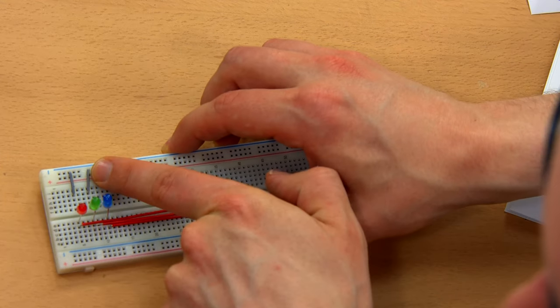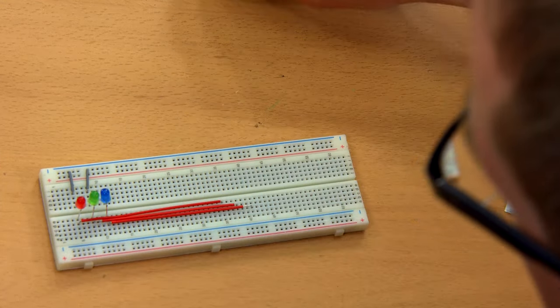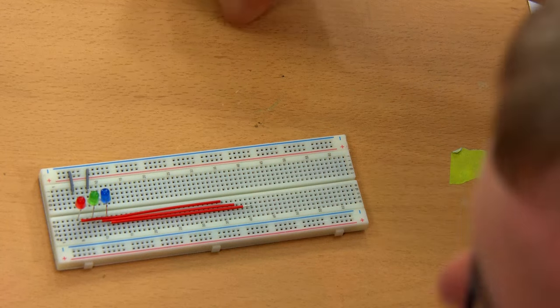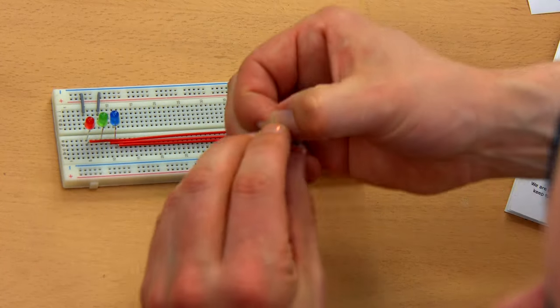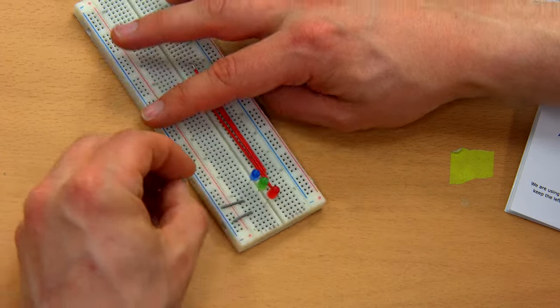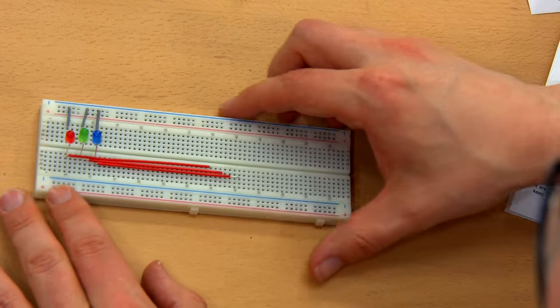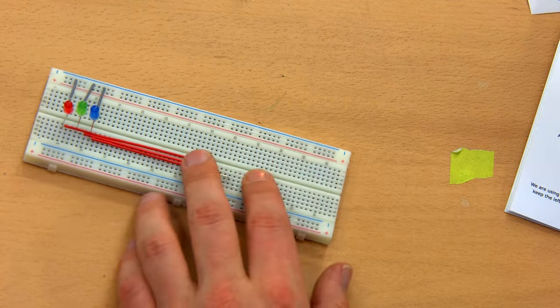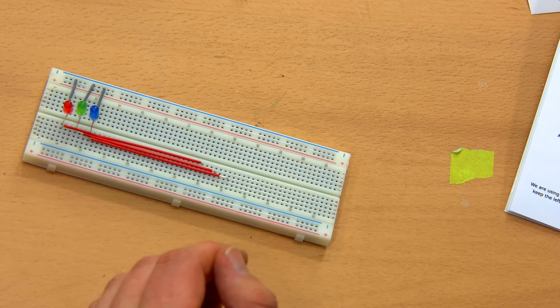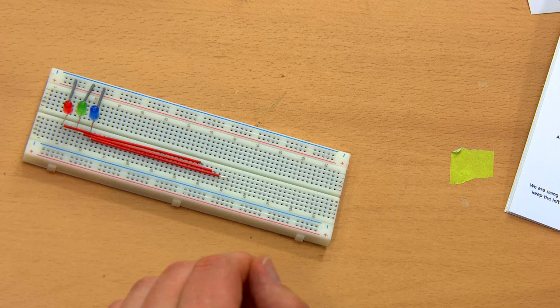If you're not familiar with breadboards, each row of sockets at the top and bottom, labeled with red and blue lines here, have continuity to each other. These are customarily used to provide power to a circuit, and that is the case for this project, but can be used for anything you choose. The rest of the board is then split into columns on the top and bottom halves, with each column having 5 sockets of continuity.